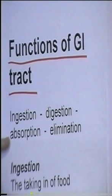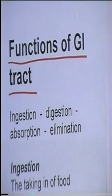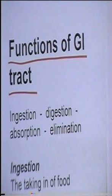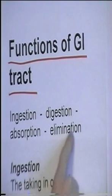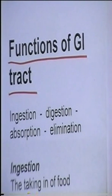Absorption is the transport of food from the gut, from the gastrointestinal system, into one of the circulatory systems — either the blood circulatory system or the lymphatic circulatory system. And finally, elimination: removal of non-digestible waste products from the body.